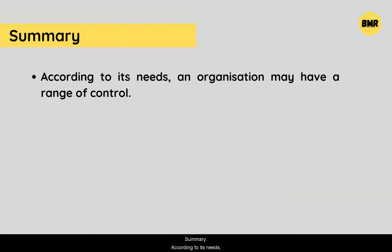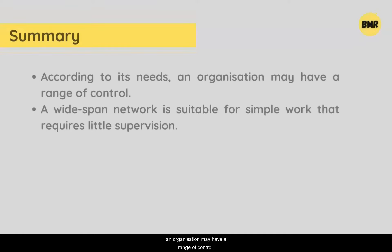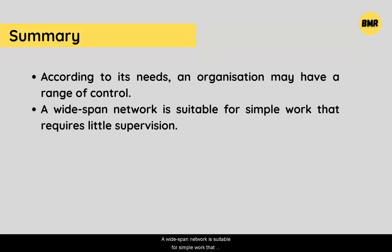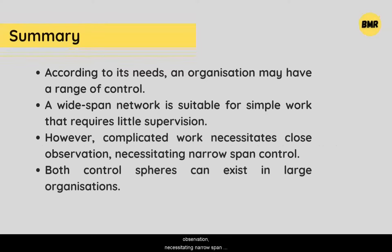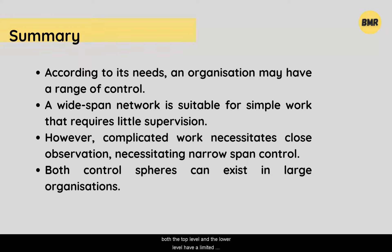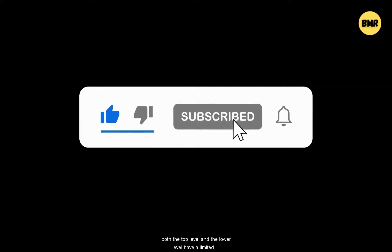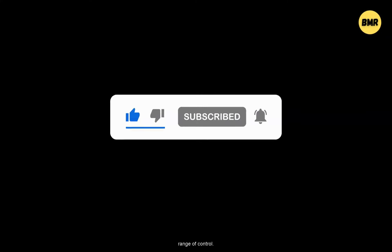Summary: according to its needs, an organization may have a range of control. A wide span is suitable for simple work that requires little supervision. However, complicated work necessitates close observation, requiring a narrow span of control. Both control types can exist in large organizations — for instance, both the top level and the lower level may have a limited range of control. Thank you very much. Keep watching and don't forget to subscribe. Best of luck.